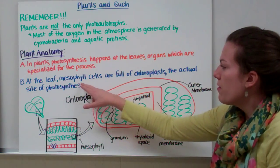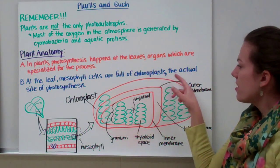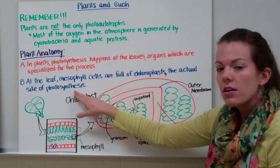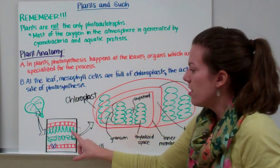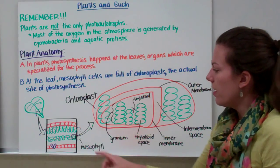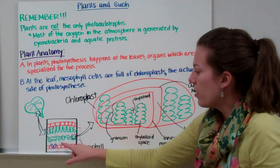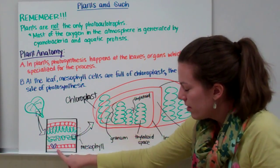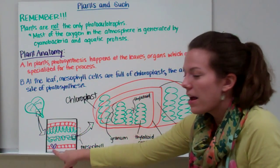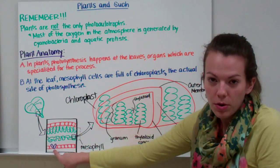At the leaf level, mesophyll cells are full of chloroplasts, the actual site of photosynthesis. So if we take a cross section of our leaf right here and zoom in, we'll see that there's different layers of the leaf. We have an outer layer, or a top layer, and a bottom layer. If you'll note the little blue molecule, or not molecule, the blue item right here, these are guard cells.